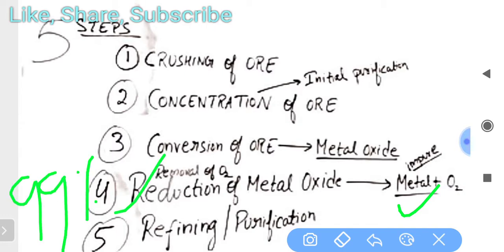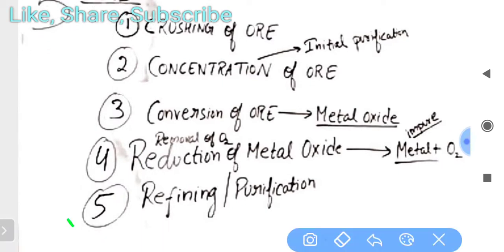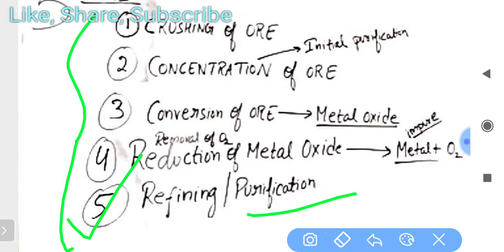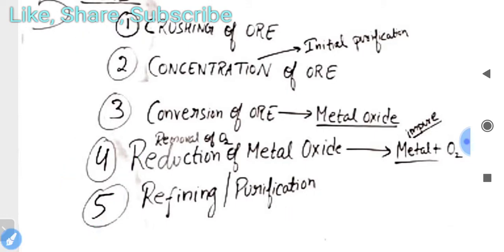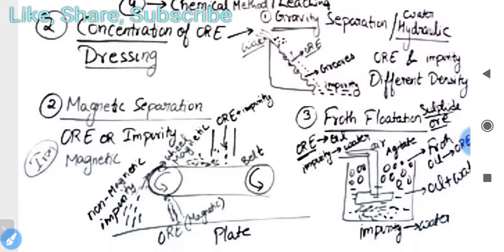When we do the fourth step we get metal, and just after that we do only refining and purification processes. So these are the five steps: first is crushing, then concentration, then conversion of ore, then reduction, then refining or purification. It is a five step process.